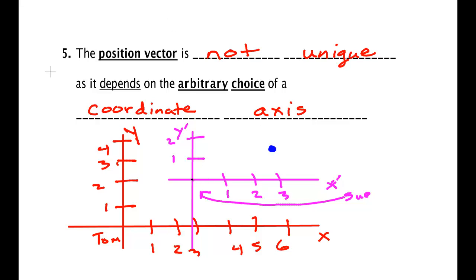Now let's draw their position vectors. The position vector for Sue would start at her origin and go to the ball. And for Tom, it would start at his origin and also go to the ball. So you can see that Sue's arrow and Tom's arrow are not the same. They do not lie over each other.